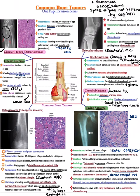Chondroblastoma, also known as Codman tumor, arises from the epiphysis. Remember: chondroblastoma and chondrosarcoma are not the same. There is calcification known as chicken wire appearance. Coffee bean nuclei are seen in chondroblastoma, and on histopath you may also see giant cells. Remember the four C's: C for chondroblastoma, C for Codman tumor, C for coffee bean nuclei, C for chicken wire appearance.